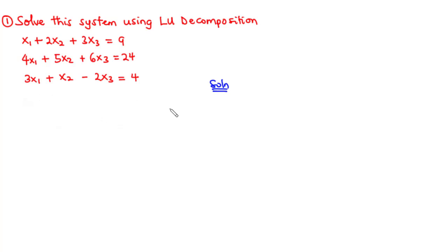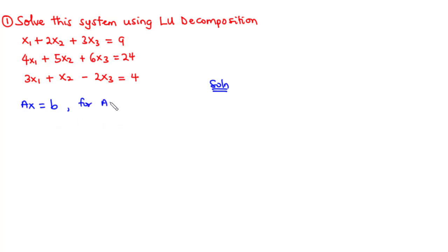Let's try to solve this example together. The first thing we are going to do is to represent this system of linear equations in the form AX equals B, where A is the coefficient matrix, X contains the unknown variables X1, X2, X3, and B consists of the values on the right-hand side of each equation. The main idea is to decompose A into L times U, so we substitute LU in place of A. We want to decompose A so that we have a lower triangular matrix times an upper triangular matrix.